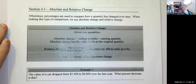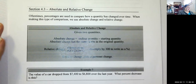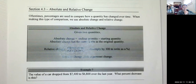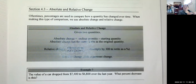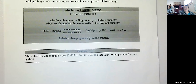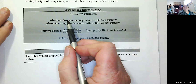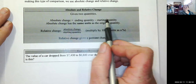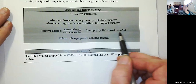Let's cover absolute and relative change. Given two quantities — two different values — absolute change is just the ending quantity minus the starting quantity; you're finding the difference. The answer always has the same unit as the original quantity. Relative change is always answered in a percent: it's the absolute change divided by the starting quantity, then multiplied by 100 to write it as a percent.